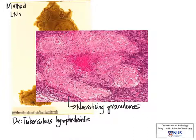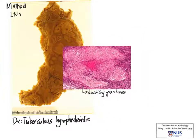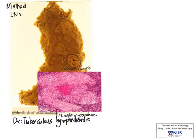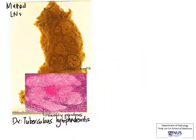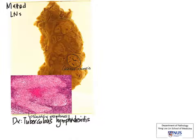Material can be sent to the microbiology lab both for culture as well as examination for acid-fast bacilli. In the pathology lab, we can also examine for acid-fast bacilli using the Ziehl-Neelsen stain.